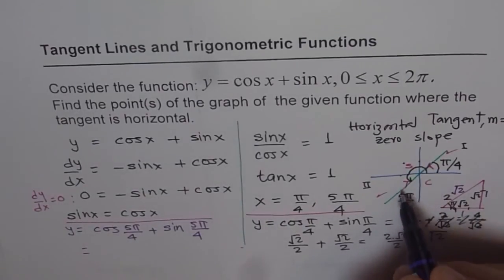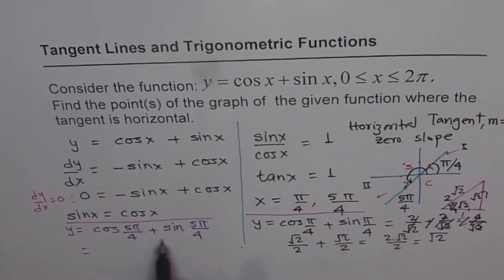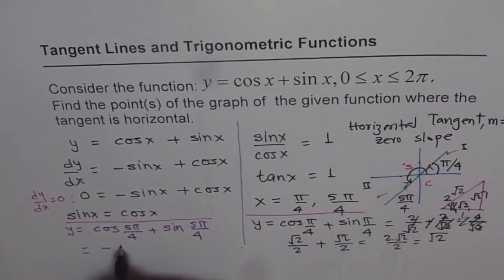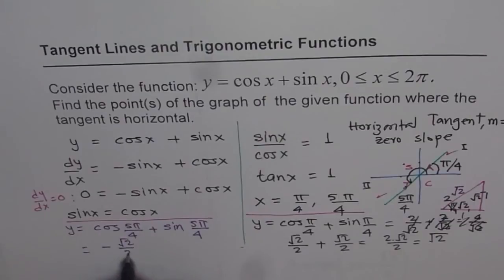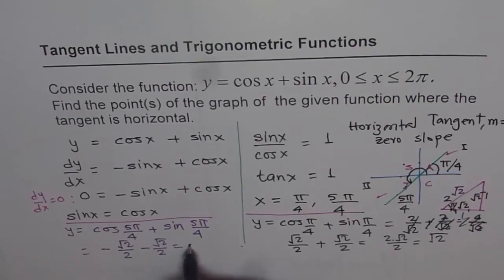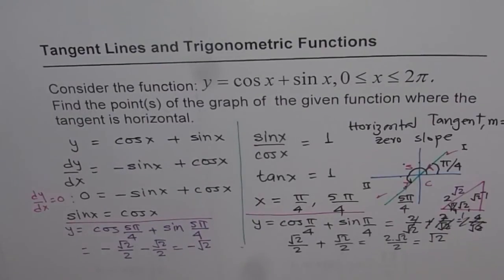In third quadrant, both cosine and sine are negative. So you get here negative square root 2 over 2, negative square root 2 over 2. When you add them up, you get negative square root 2.